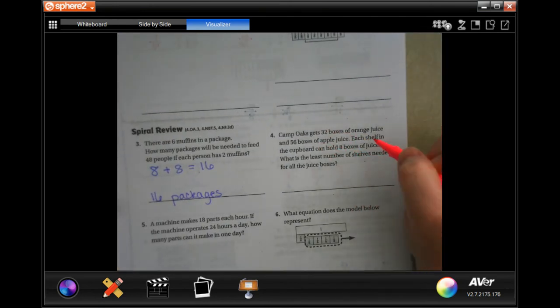Camp Oak gets 32 boxes of orange juice and 56 boxes of apple juice. Each shelf in the cupboard can hold eight boxes of juice. What is the least number of shelves needed for all of the juice boxes?